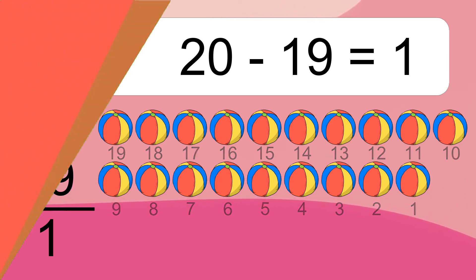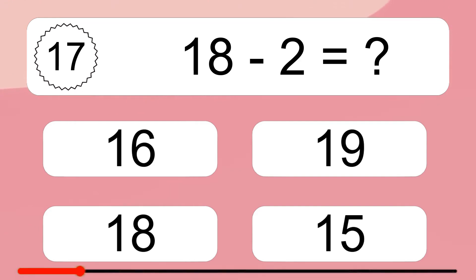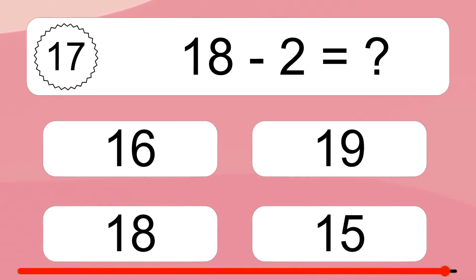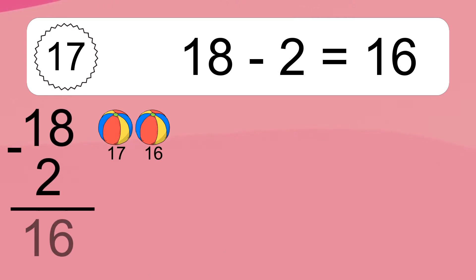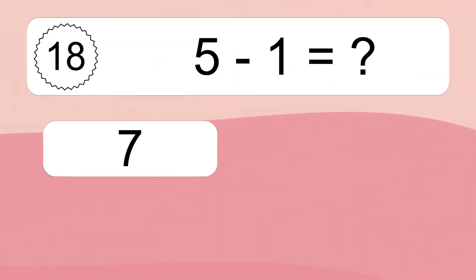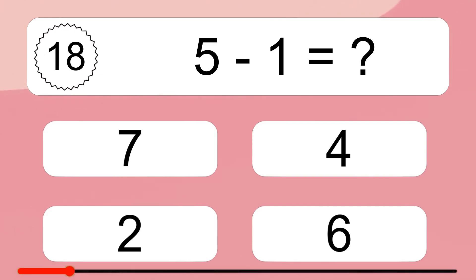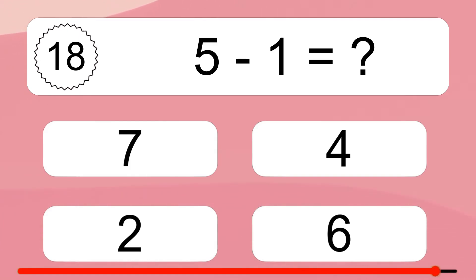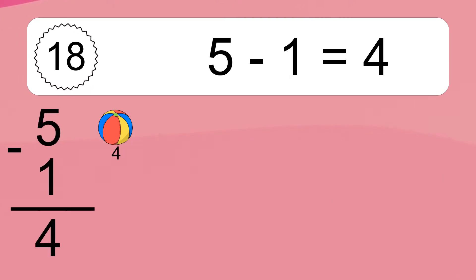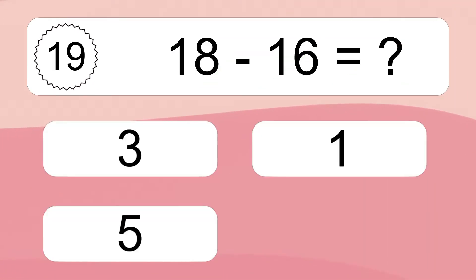18 minus 2 equals what? 18 minus 2 equals 16. Let's count it: 17, 16. 5 minus 1 equals what? 5 minus 1 equals 4. Let's count it: 4.